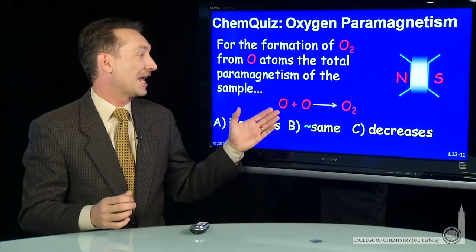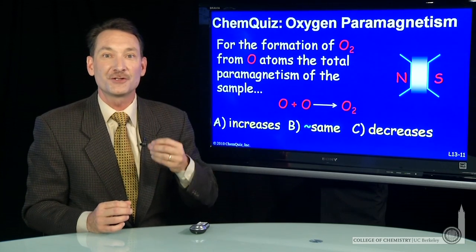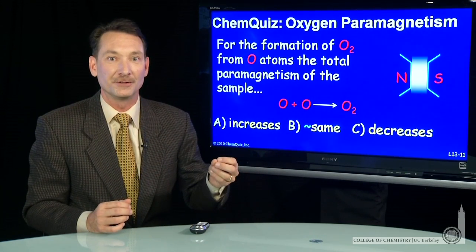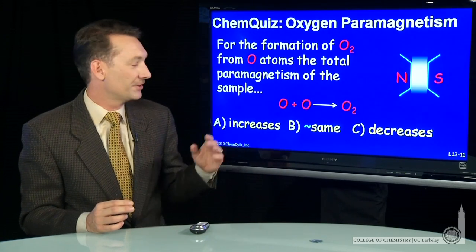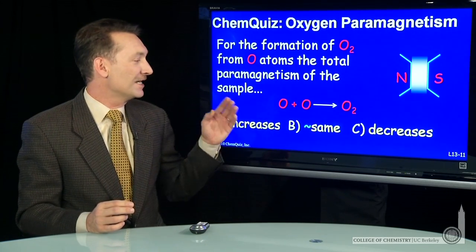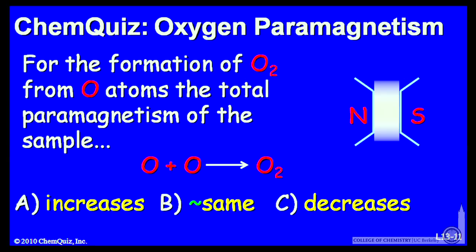Let's look at the reaction of oxygen atoms to form oxygen molecules and think about what happens to the total paramagnetism of the sample. Paramagnetic oxygen atoms making paramagnetic oxygen molecules, does the paramagnetism increase, stay the same, or decrease? Think about that for a minute and make a selection.